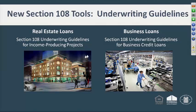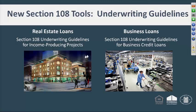The guidelines we're going to make available will be broken down into two types of loans. One will focus on real estate loans — the big development projects like apartment buildings, office buildings, and shopping centers. These are income-producing projects where you're looking at that specific project to generate the cash flow that will pay back the loan. Another category is business loans — loans to existing ongoing businesses that will be used for expansion to create more jobs or provide more needed services.